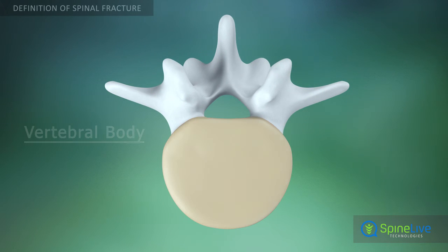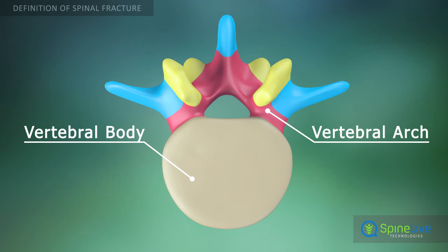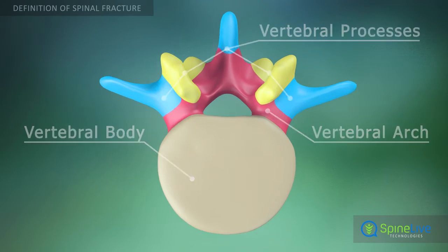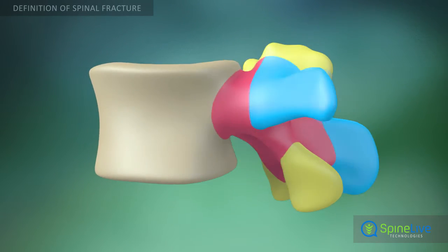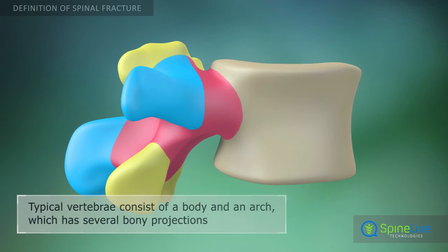A typical vertebra consists of a body and a vertebral arch, which has several processes for articular and muscular attachments.